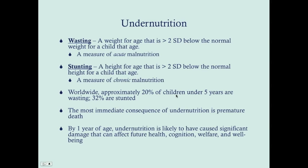Worldwide, approximately 20% of children under the age of five are wasting and 32% are stunted. The most immediate consequence of undernutrition is premature death. By one year of age, undernutrition is likely to have caused significant damage that can affect future health, cognition, welfare, and well-being. This is a major concern in the developing world — undernourished children face problems affecting intelligence, function, and future health, putting them in a weak position both now and in the future.